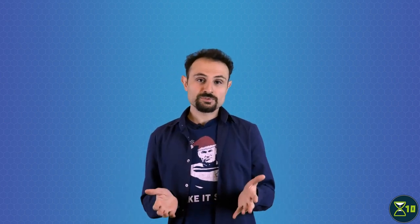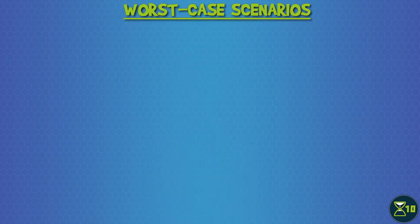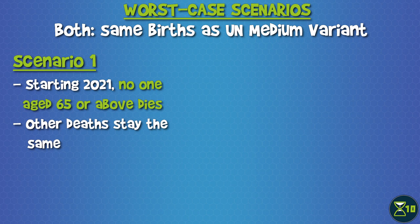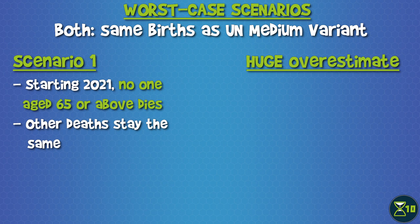So, making an accurate demographic projection on the effects of life extension on the global population is beyond what we can do right now, on this show anyway, but we can still get a sense of how bad the situation might get by imagining two completely unrealistic worst-case scenarios. Since we can't make a sensible prediction of how life extension might change the number of births, let's assume that it will stay exactly the same as in the UN medium-variant projection in both our worst-case scenarios. In the first scenario, we also assume that all deaths of people aged 65 and above are exclusively age-related, and that starting 2021, none of them will happen.